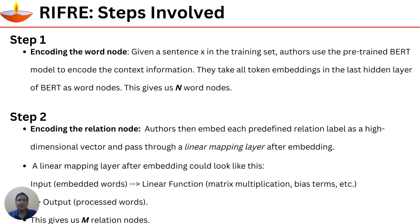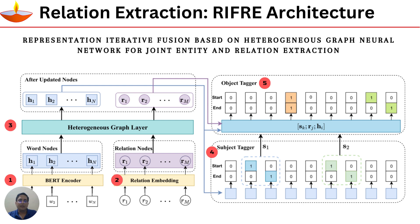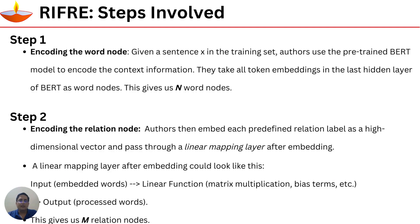Given a sentence X in the training set, the authors use the pre-trained BERT model to encode the context information. They take all the token embeddings in the last hidden layer of BERT as the word nodes, giving us N word nodes. So we have word representations w1, w2, ..., wN — these tokens get encoded by the BERT encoder, giving us word nodes h1, h2, ..., hN.